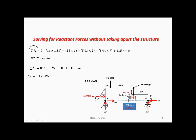Summation of forces in the y direction is equal to zero — positive is up. AY we assume is going up so we place it as positive. The 25 kN force is going down, and the 8.04 kN force is going down. BY is going up and we've already solved for it — that is a positive. Crunching the numbers gives us 24.74 kilonewtons acting up. Again, a positive number means we made the right assumption.